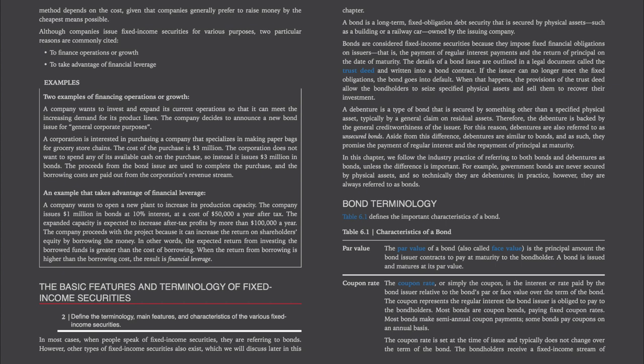Although companies issue fixed income securities for various purposes, two particular reasons are commonly cited: one, to finance operations or growth; or two, to take advantage of financial leverage. For example, a company wanting to expand its operations may announce a new bond issue for general corporate purposes. Alternatively, a corporation purchasing a company for $3 million may issue $3 million in bonds, using the proceeds to complete the purchase while paying borrowing costs from its revenue stream.